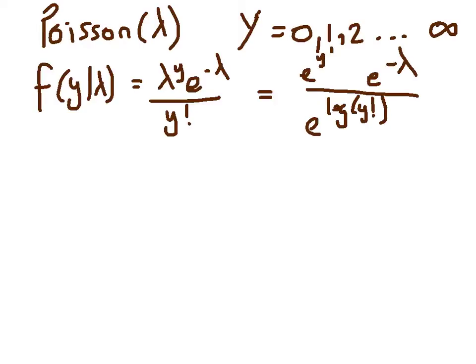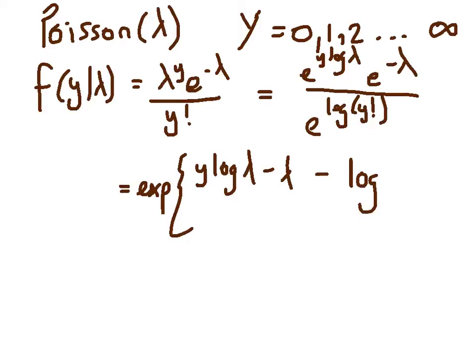Now I have everything as e to the something, and I can write that all in one go as e to the y log lambda minus lambda minus the log of y factorial.